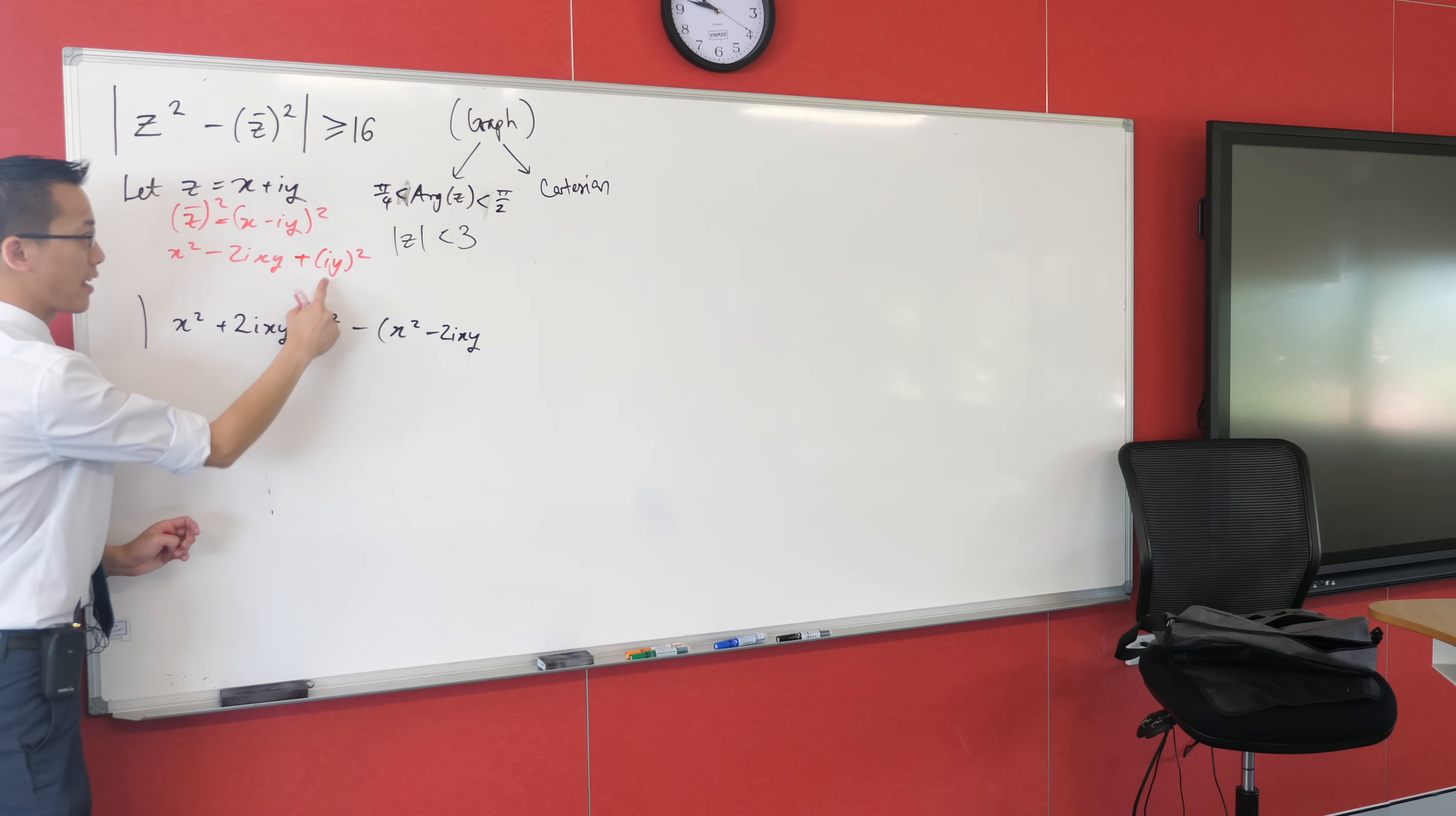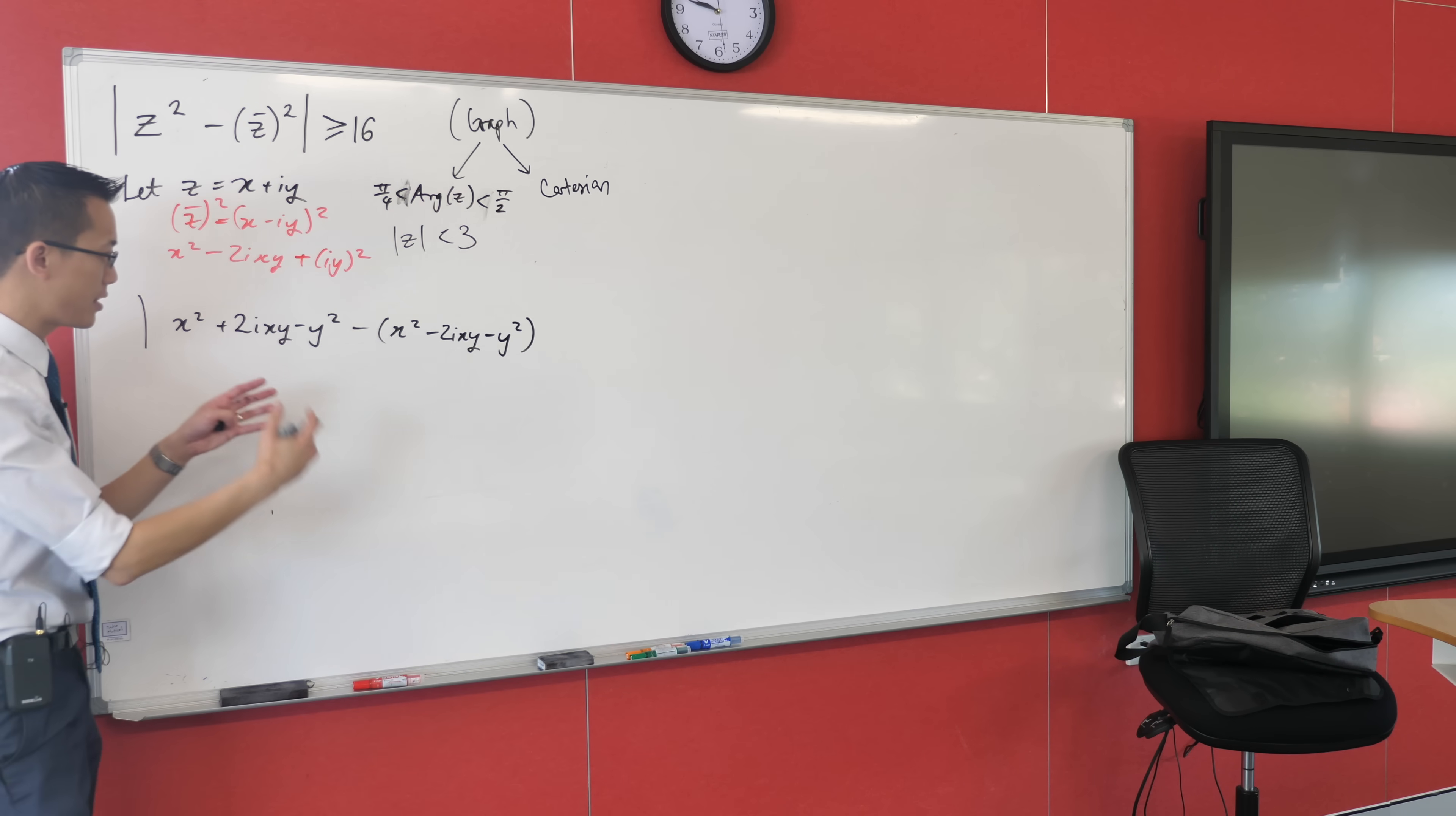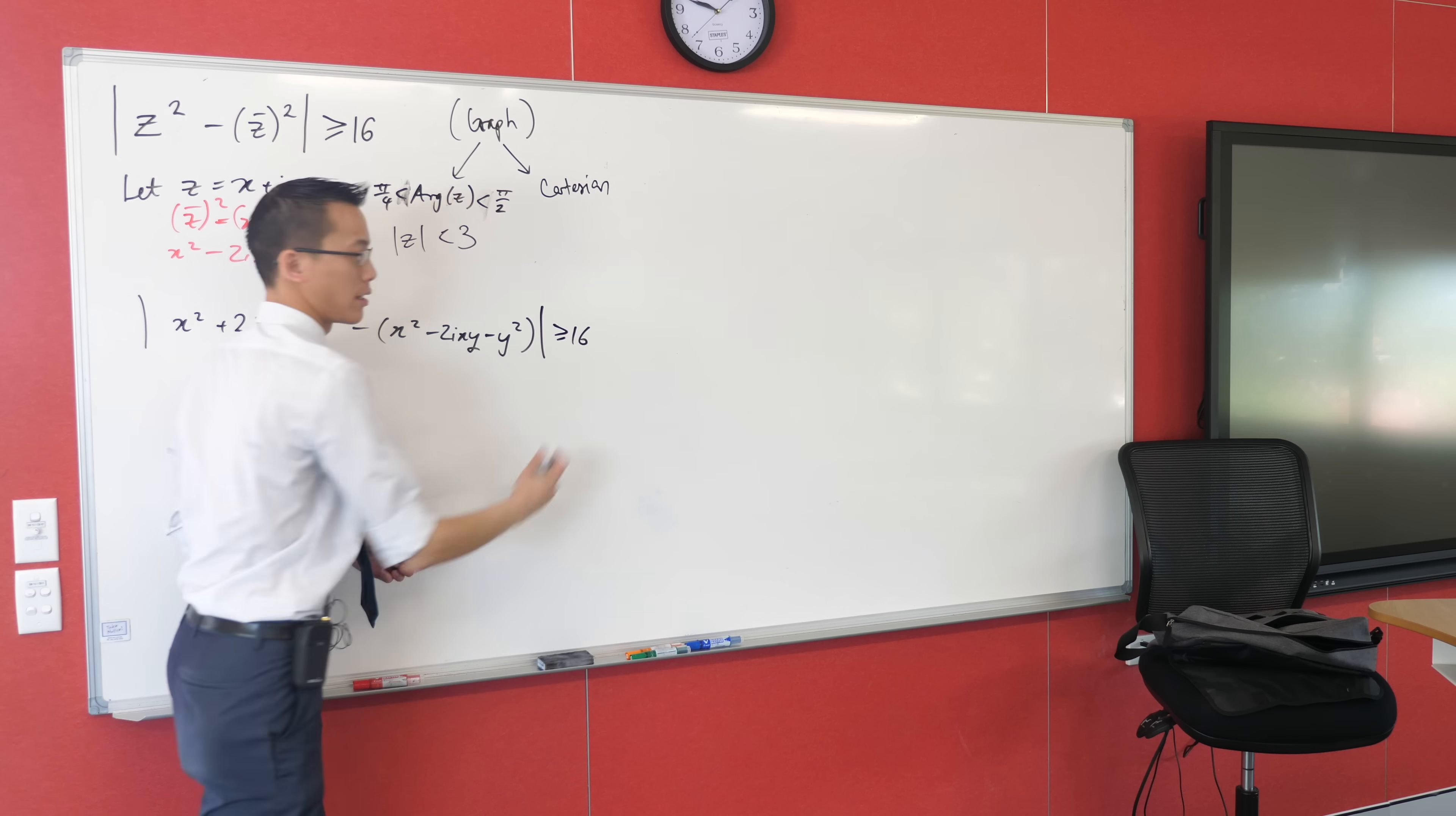This minus that we had here came from the i's, and that hasn't gone anywhere, so I'm still going to—minus y². Is that okay? And you can see clearly a whole bunch of things are going to collapse here, that's why we like conjugates, because they fit so nicely together. Finish my modulus sign there, and it's going to be greater than or equal to 16.